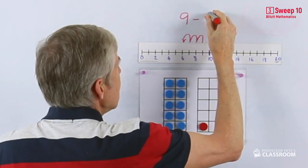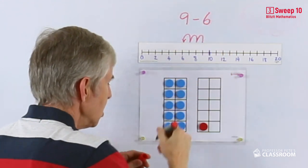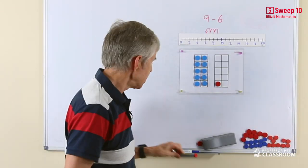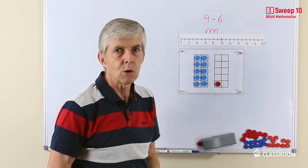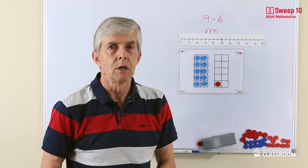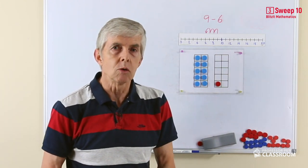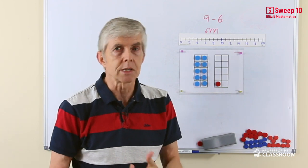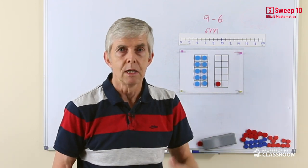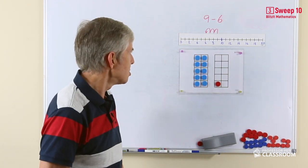We can also use the number line for turnaround facts or difference of three facts, like nine take away six. We want the students to have already been familiar with taking away three, know that nine take away three is six before we ask them the more difficult nine take away six question.